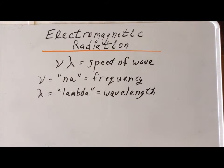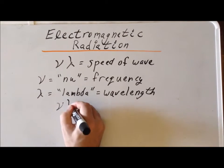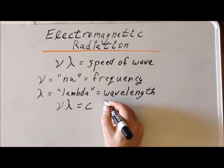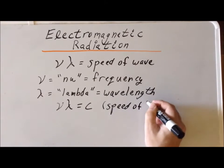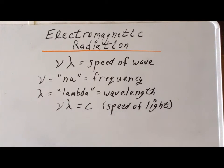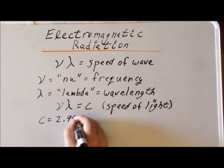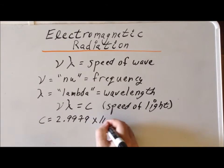In the specific case when we're talking about electromagnetic radiation, all electromagnetic radiation propagates at exactly the same speed, which we call the speed of light. So we can write this relationship as nu times lambda equals C, where C is the speed of light. Thanks to the special theory of relativity from Albert Einstein, this particular value is a constant. The speed of light has the value of 2.9979 times 10 to the eighth meters per second.